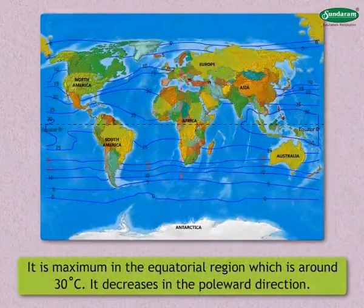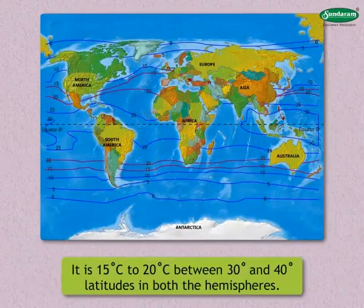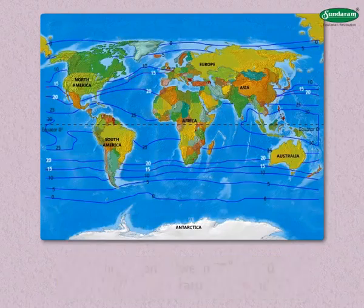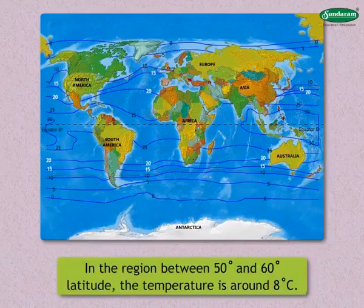Temperature decreases in the poleward direction. It is 15 to 20 degrees centigrade between 30 and 40 degrees latitudes in both hemispheres. In the region between 50 and 60 degrees latitude, the temperature is around 8 degrees centigrade.